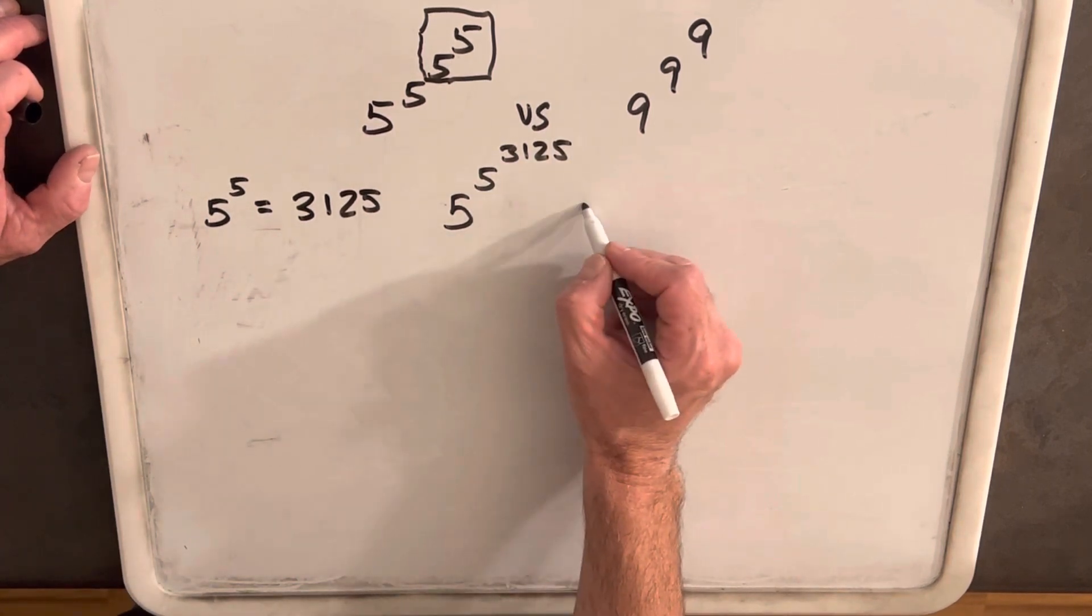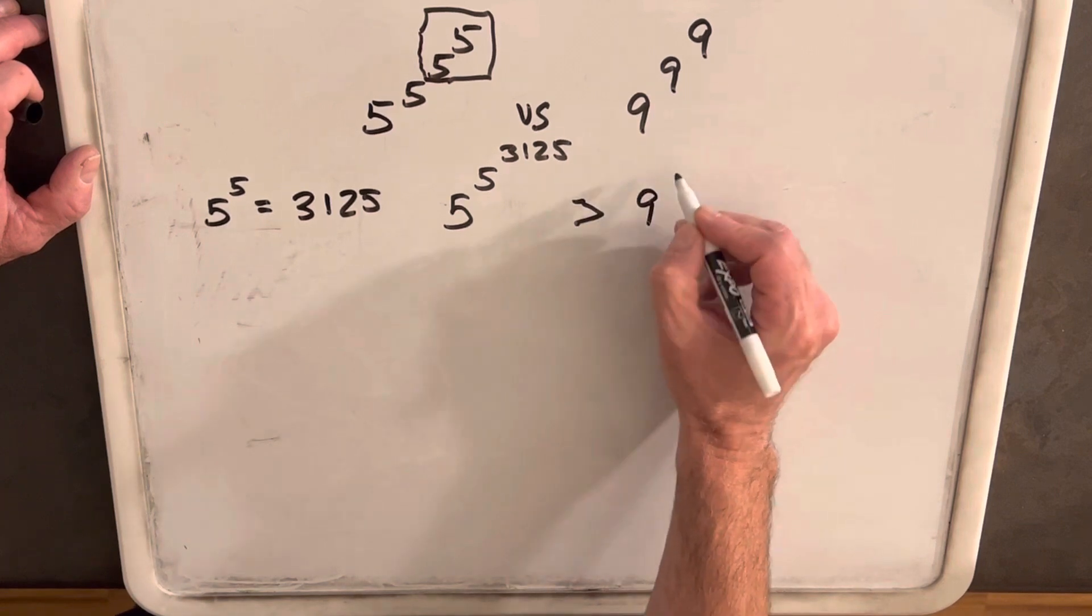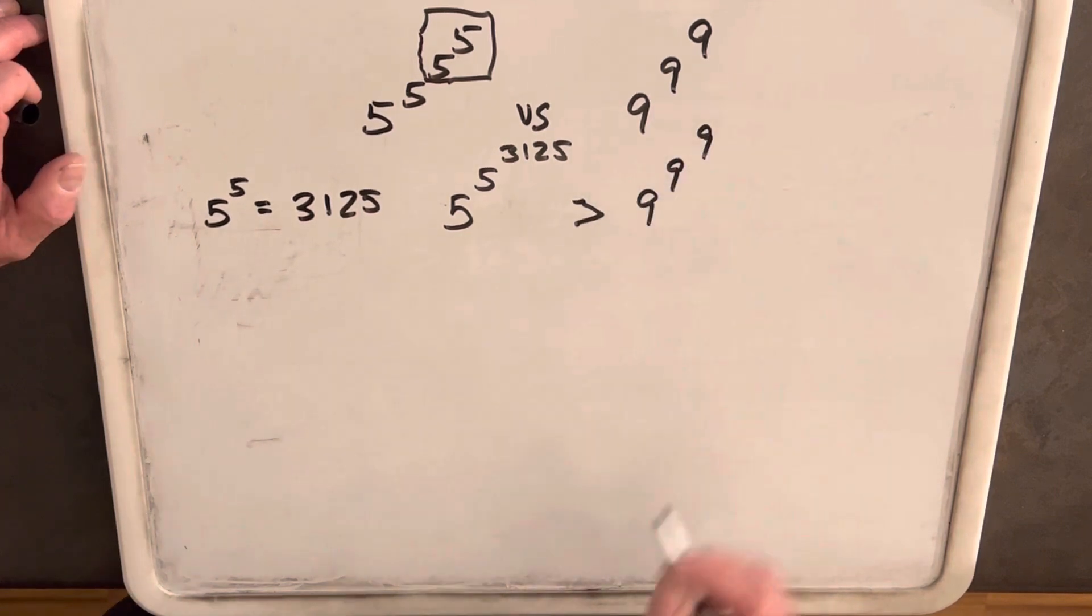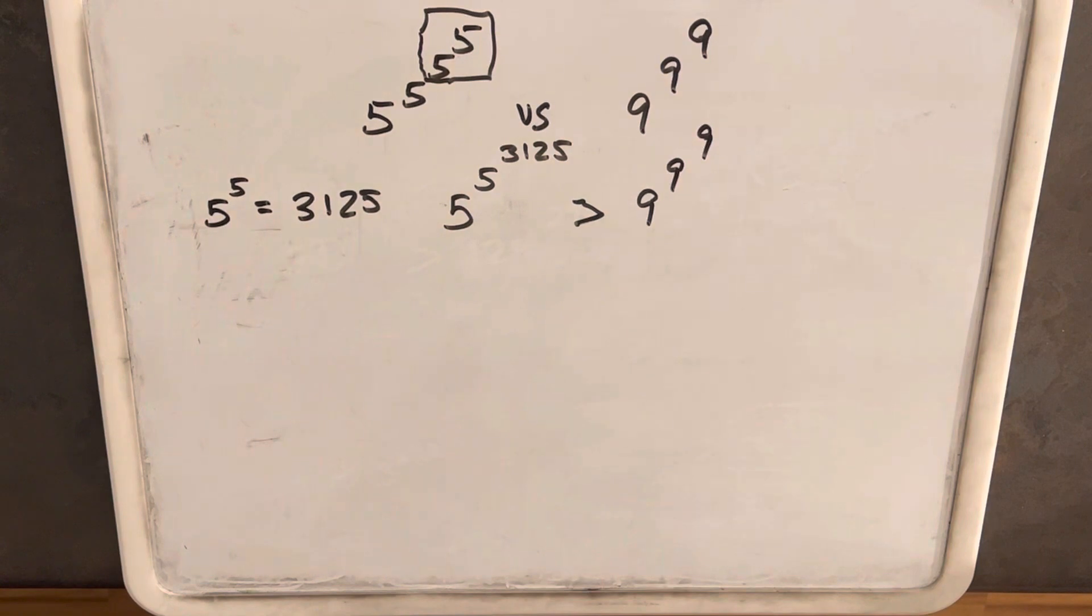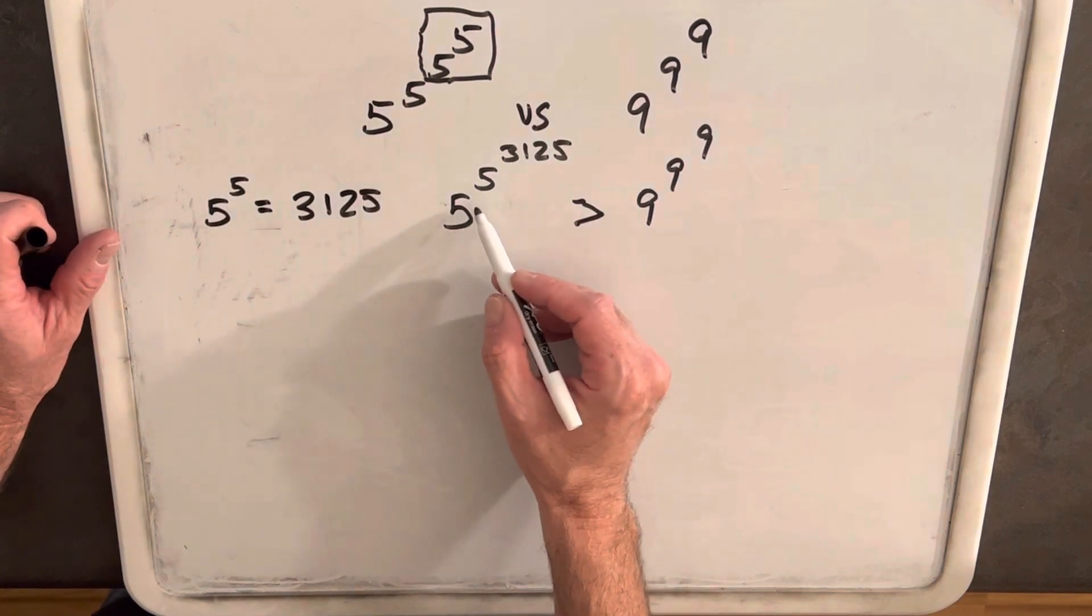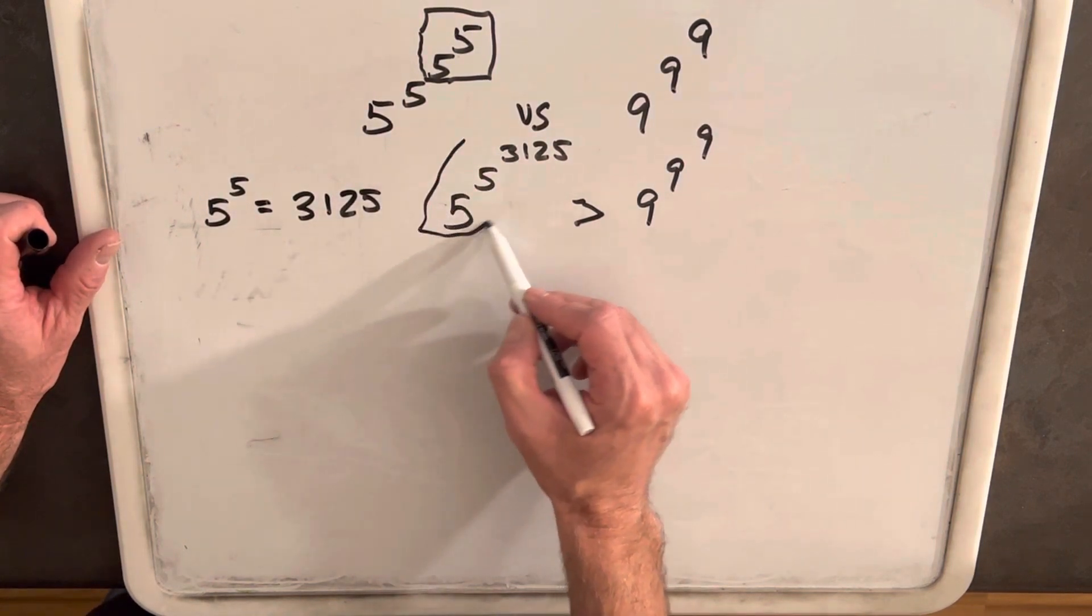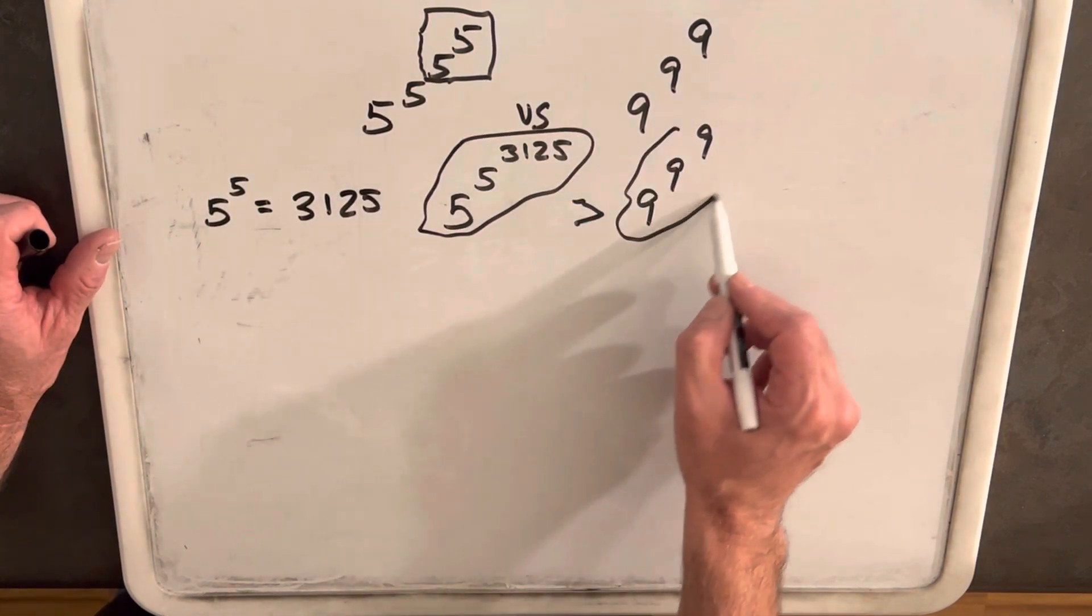I'm going to try to prove that this is greater than 9 to the 9 to the 9. Now the reason I did that is I have a tower of 3 numbers on the left side and a tower of 3 numbers on the right side.